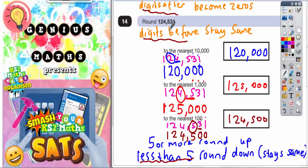Once you've done that and decided what the circle digit needs to do, the digits after that circle digit are replaced with zeros. The digits before the circle digit stay as they are.